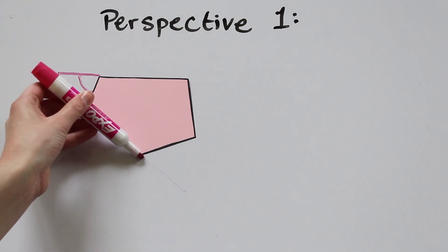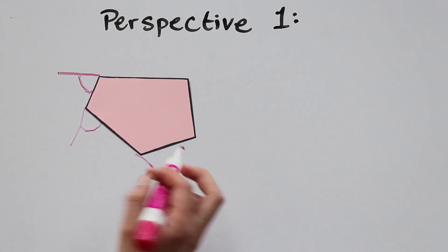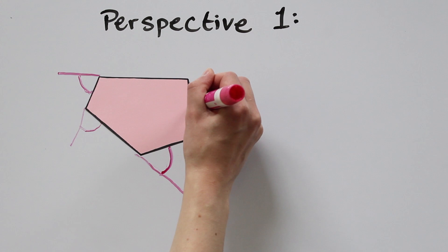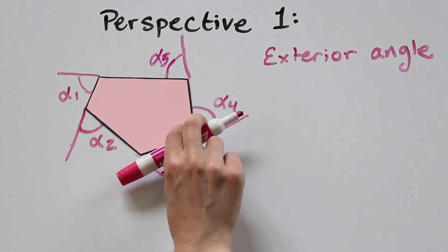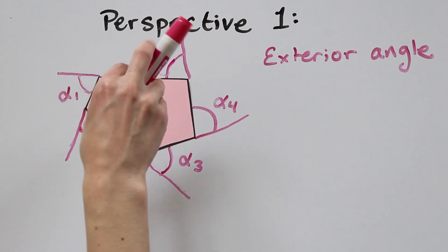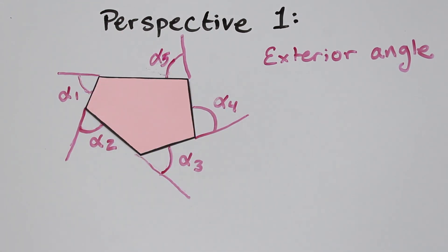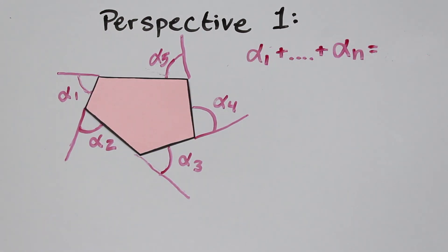The angle of this rotation is called the exterior angle at that vertex. After traveling once around the polygon, the pen will have rotated a full 360 degrees. So with this reasoning, alpha 1 plus alpha 2 plus up to alpha n is 360 degrees, or in radians that's 2 pi.